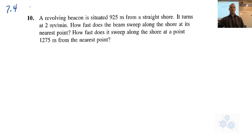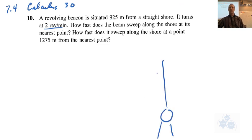I changed that two revolutions per minute to 4π, and it doesn't work. Okay, so a revolving beacon is situated 925 meters from a straight road. This is very similar to example 4 that we did, right? Here's the beacon. That's a brutal straight line. Let's try that again. Okay, so 925.